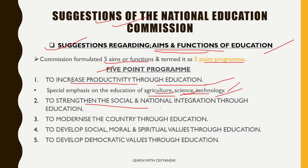The second point is to strengthen social and national integration through education. Education should promote national integration by opening common schools where all children receive equal education based on their ability, not their economic condition. The commission suggested that Hindi as the national language should be developed to promote national unity. Schools should organize programs that teach children about social equality and national integration.